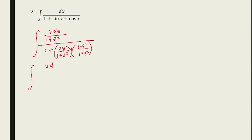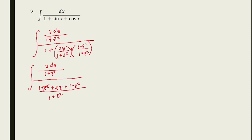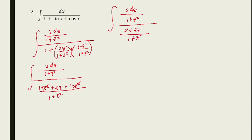We copy 2 dz over 1 plus z squared and take the LCD, which is 1 plus z squared. The denominator becomes 1 plus z squared plus 2z plus 1 minus z squared. After canceling, the expression simplifies to 2 dz over 1 plus z squared over 2 plus 2z over 1 plus z squared.